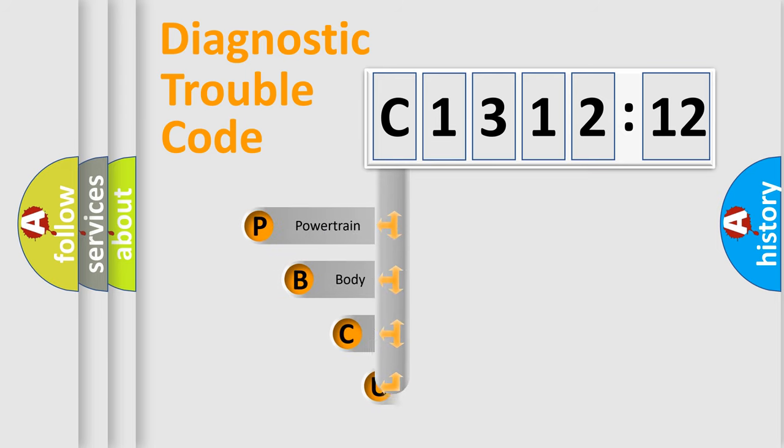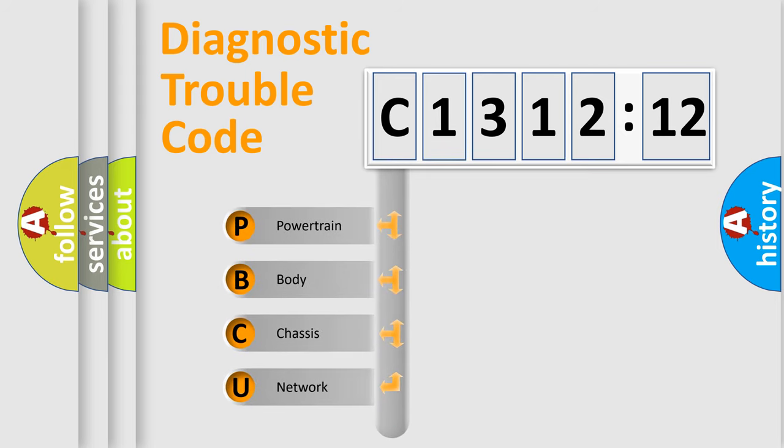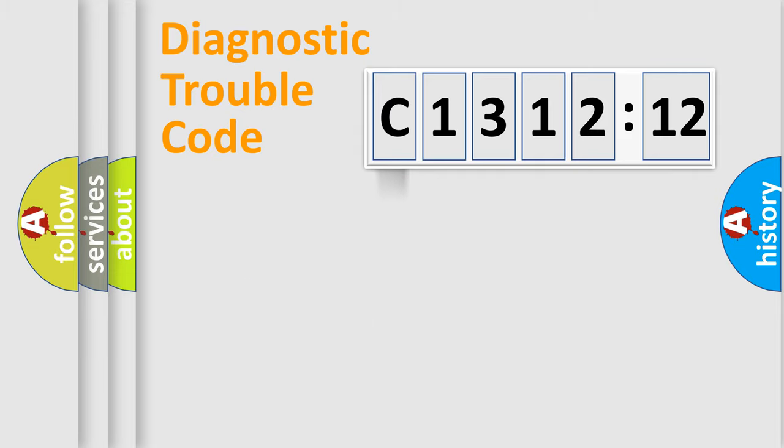First, let's look at the history of diagnostic fault code composition according to the OBD2 protocol, which is unified for all automakers since 2000. We divide the electric system of automobile into four basic units.